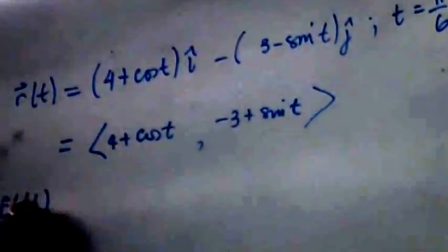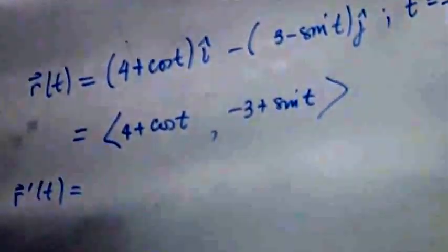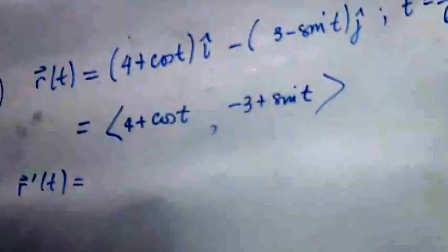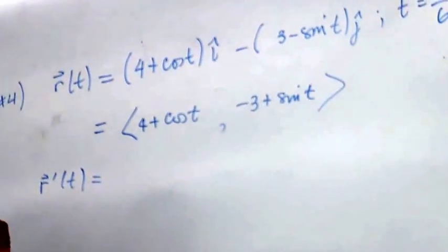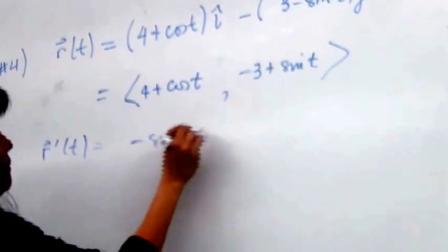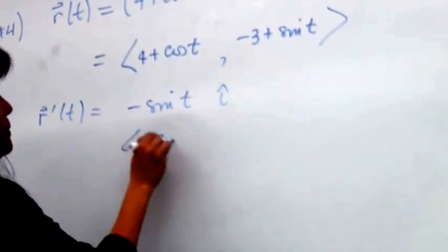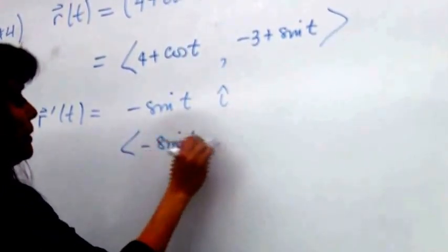How do we form the unit tangent vector? We need to take the derivative of R. The derivative of 4 plus cosine t with respect to t is negative sine t. Those of you who like the i-j notation will write that with i.